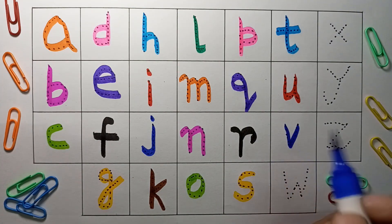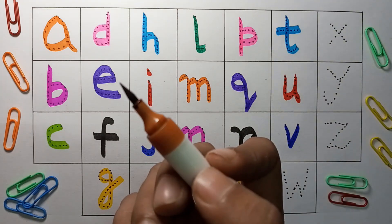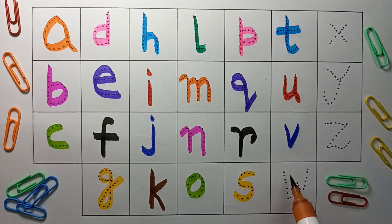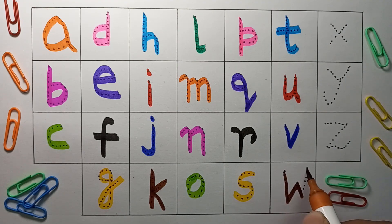V, V for vase, brown color. W, W for watch.